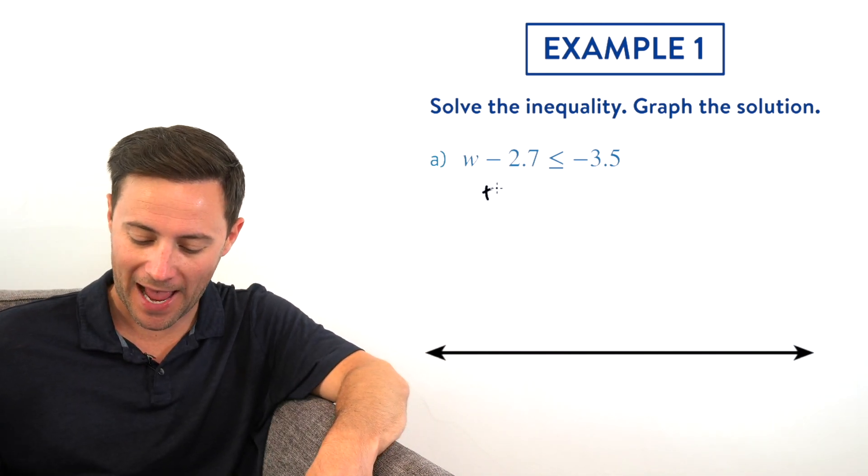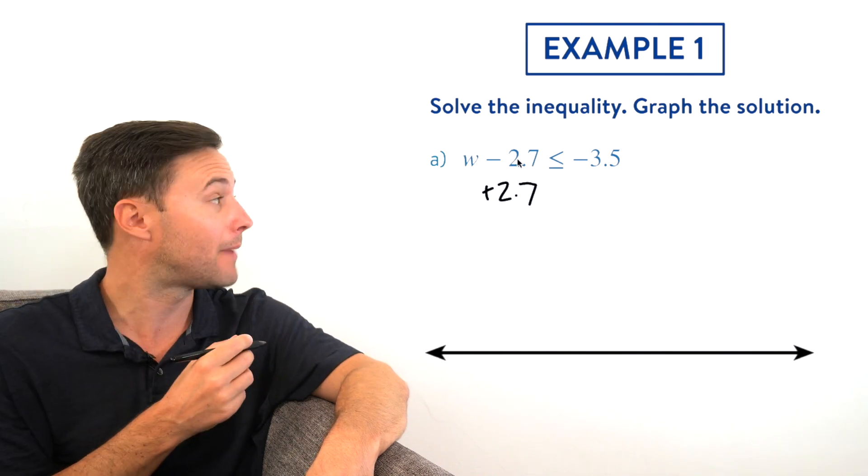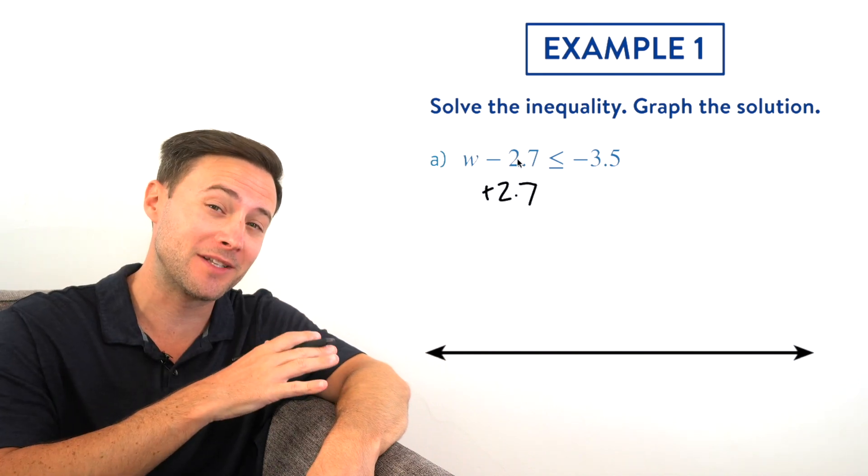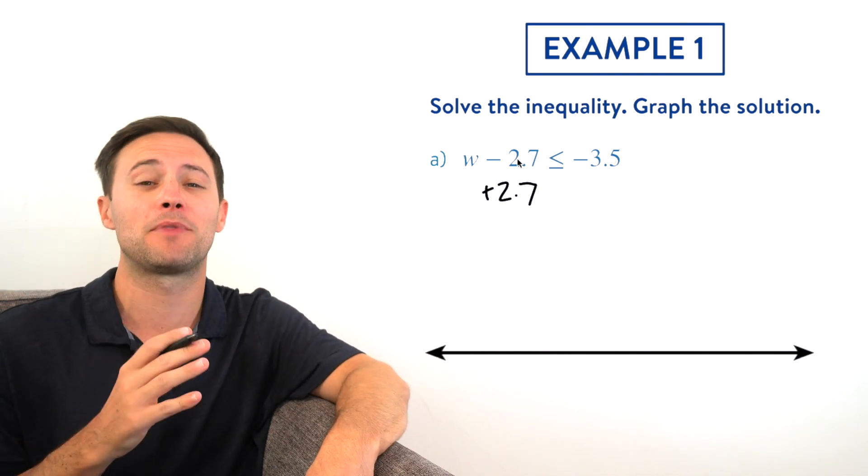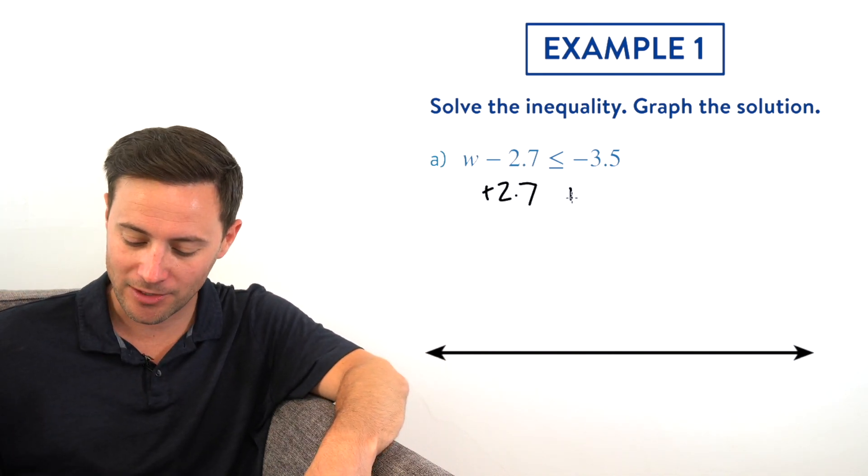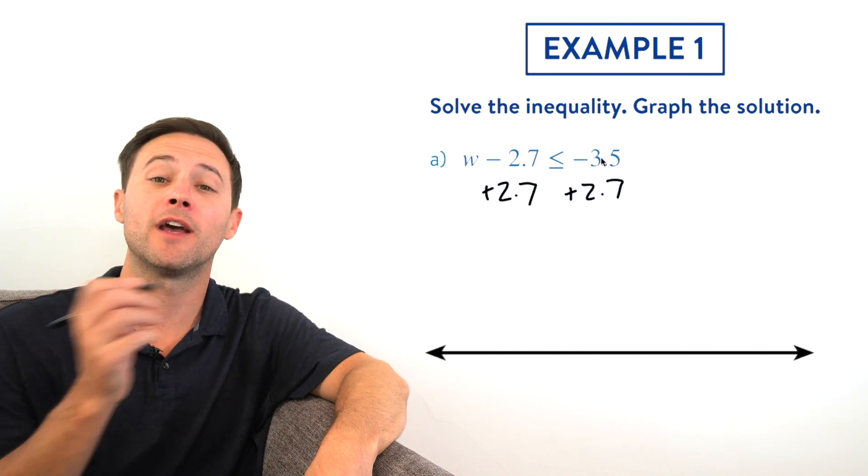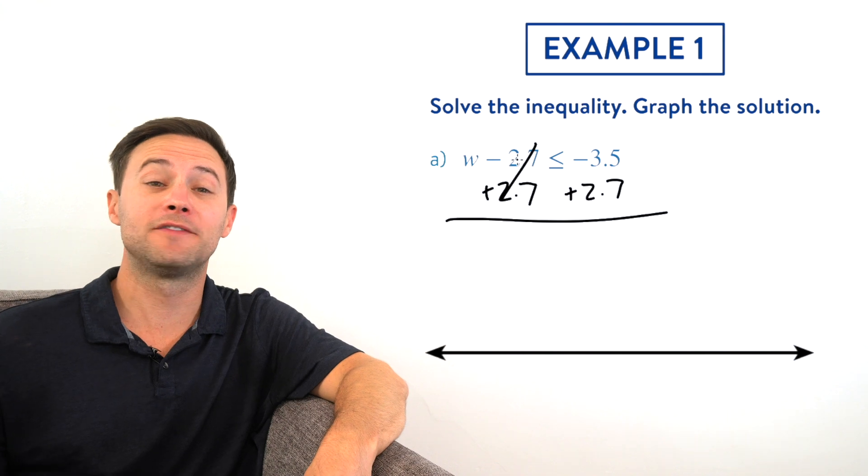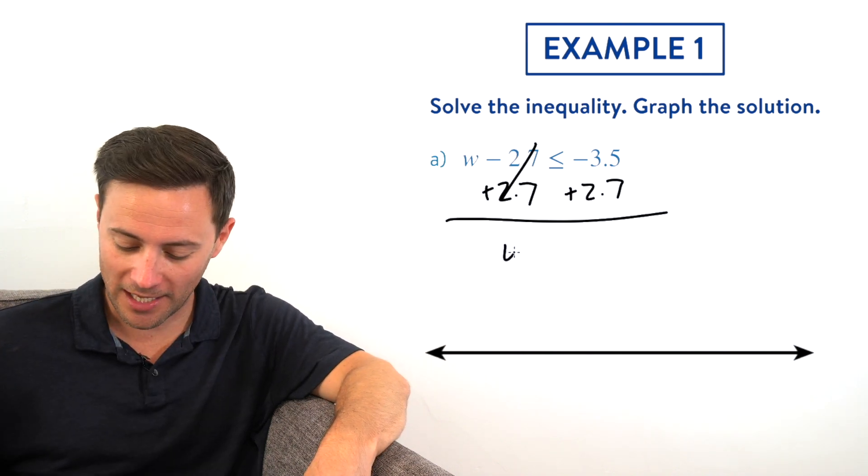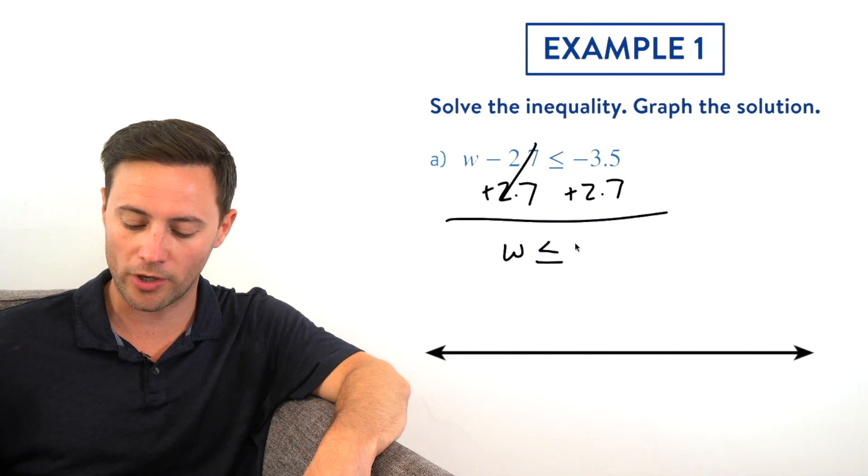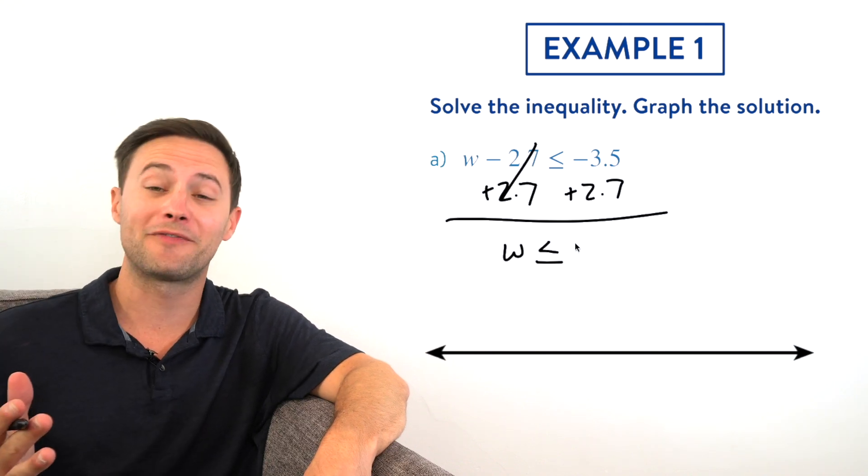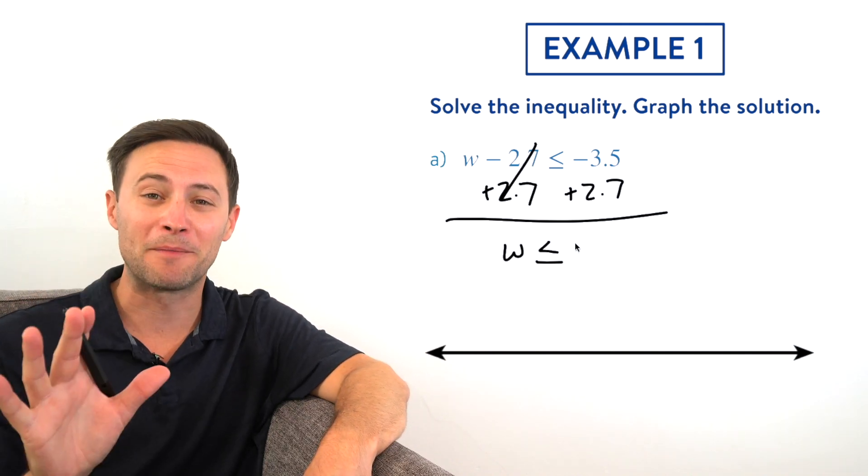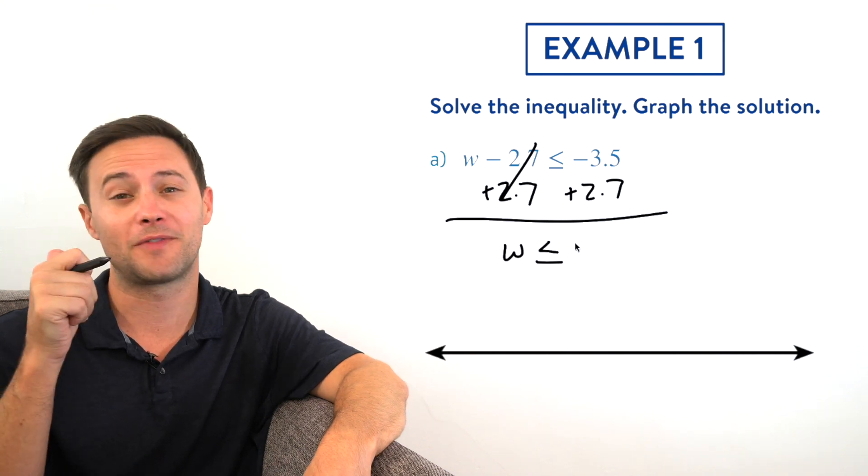So I'm going to add 2.7 on the left side of my inequality, and the golden rule says anything I do to one side, I need to do the exact same thing to the other, so I'm going to add 2.7 on the other side as well. That leaves us with w alone on the left side, less than or equal to—now we need to find out what's negative 3.5 plus 2.7. Some of you may be able to do that in your head, which is fantastic.